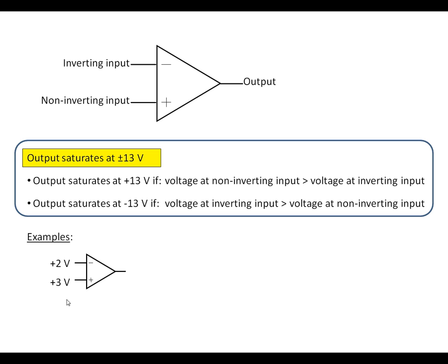So we'll look at a couple of examples. First of all we identify the larger of the two voltages and we see that it's at the non-inverting input with the plus sign, so it's going to be plus 13 volts at the output.